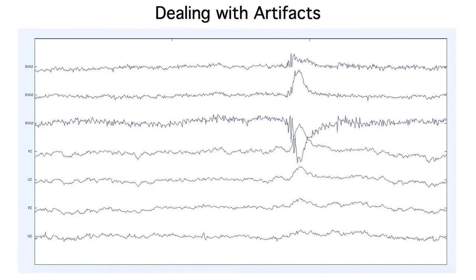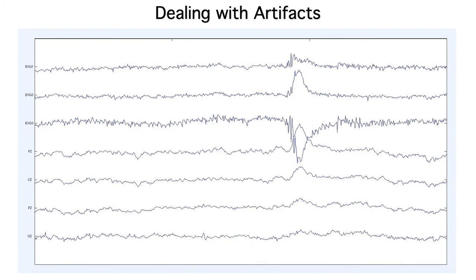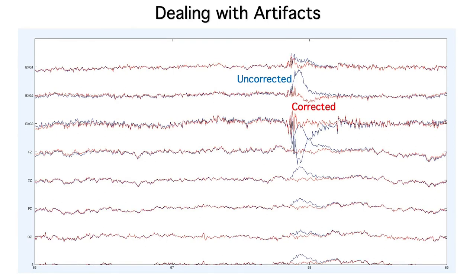Third, we can try to estimate the artifactual voltage and subtract it from the single trial EEG data. This is called artifact correction. This example shows a segment of EEG from multiple channels at the time of a blink. And here's what the corrected waveforms look like after we subtract out the blink-related activity. You can see the same EEG, but without the blink artifact.